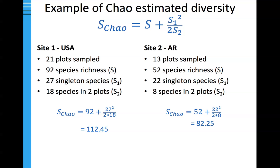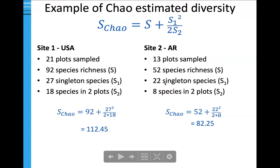Here's an example from Kim's data. If we sampled 21 plots and had 92 species, with 27 singleton species and 18 species recorded in only two plots, we get a Chao estimated diversity of 112.45. For the Argentinian dataset with only 13 plots, we add the species richness to the squared number of singleton species divided by the number of species recorded in two plots. Comparing both, the U.S. site had higher overall estimated diversity based on the Chao index.